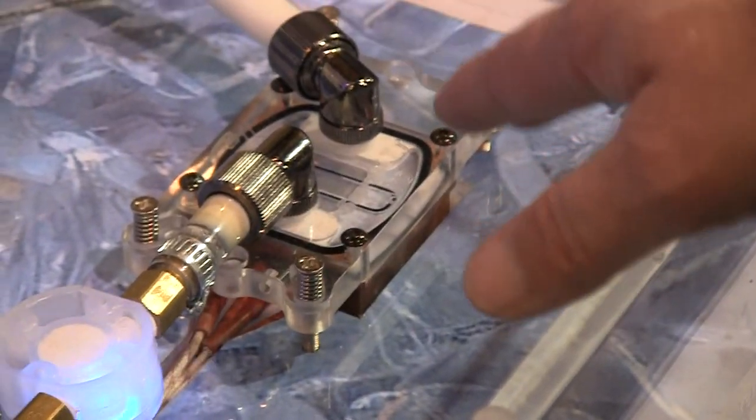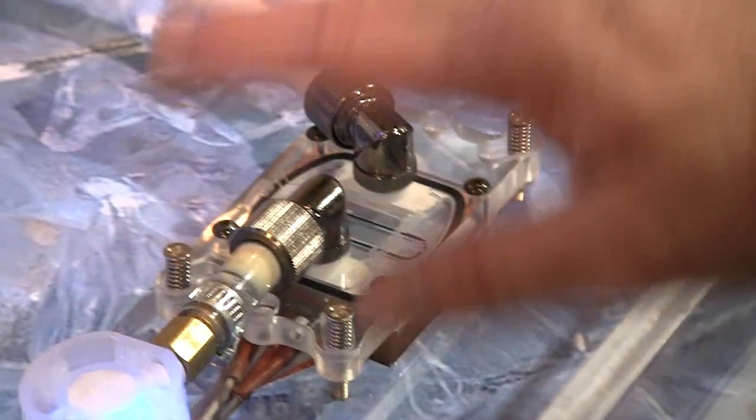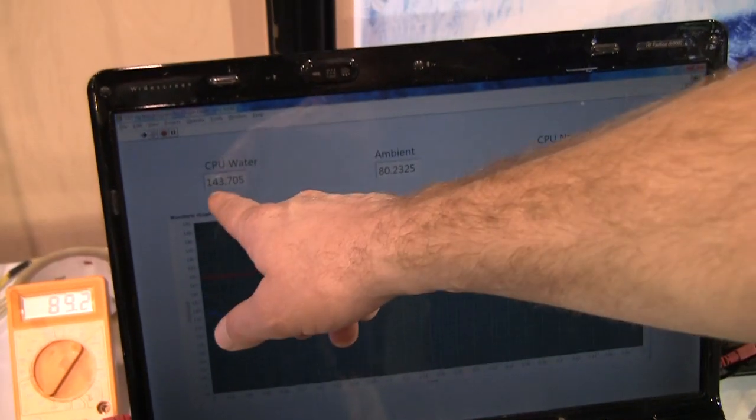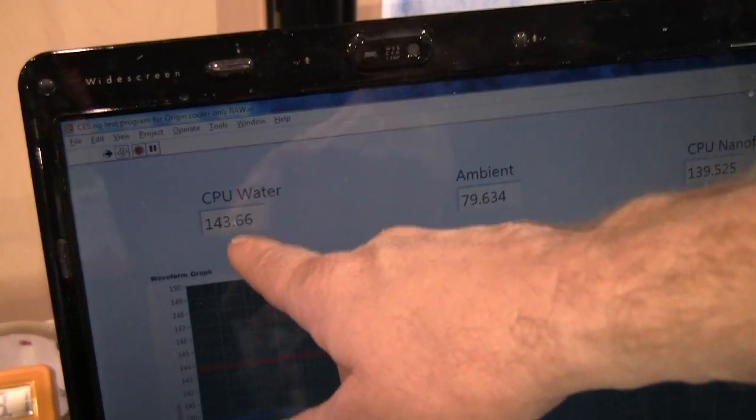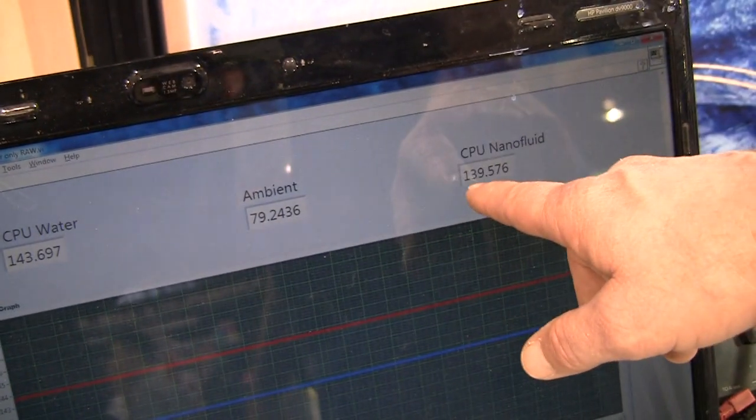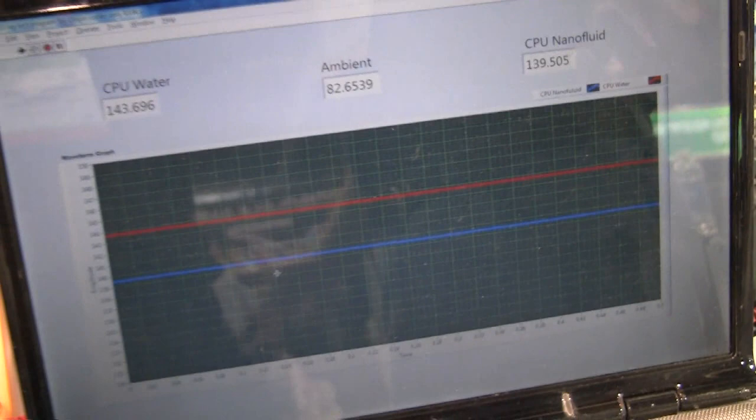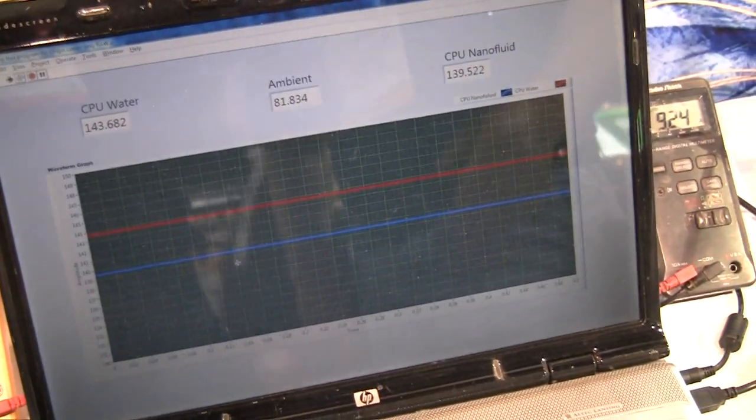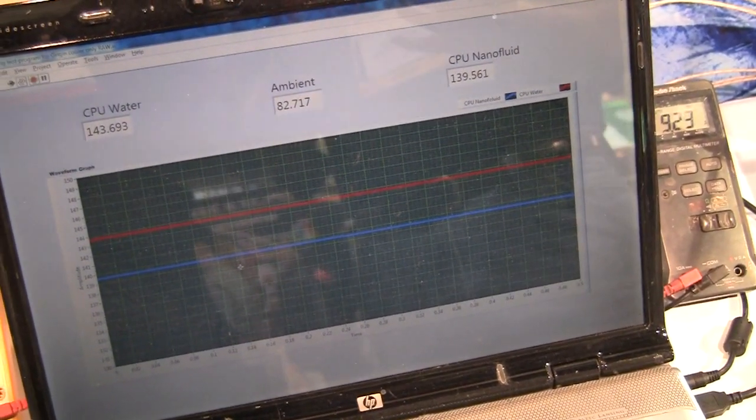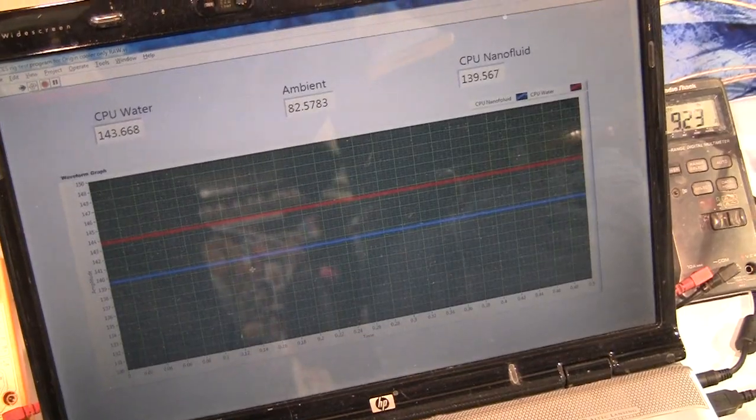In this application, just with one CPU, you can see here that water over here is almost 144.6, I mean 143.6. Right here with 139.5, sometimes 4 or 5 degrees. Now, depending on what you're cooling, if you're cooling a CPU and a GPU, you'll see a bigger temperature difference.